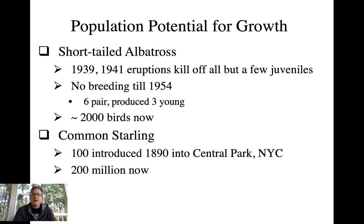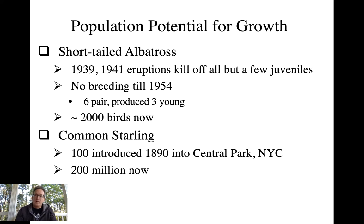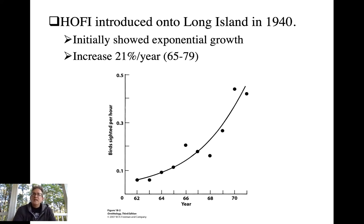They just took off. Now they are throughout the New World — North and South America — with at least 200 million birds in the population. Yes, it's a longer time frame than the short-tailed albatross, but not that much more considering the difference between 2,000 birds and 200 million. Starlings have large clutches, mature very quickly, get to breeding right away, and can have multiple clutches per year.